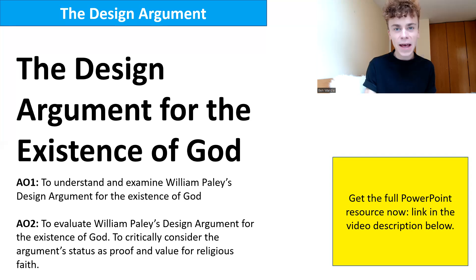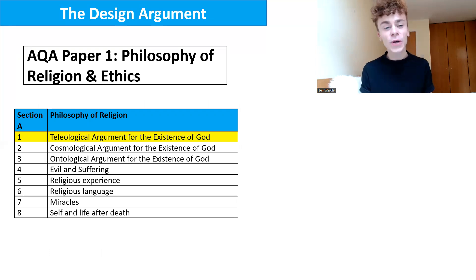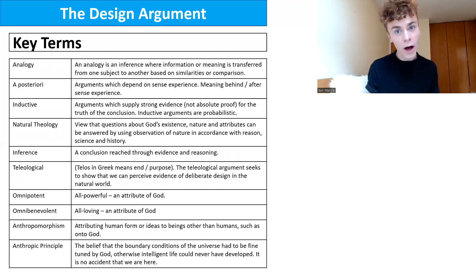In terms of where this fits on the AQA A-level specification, this is from Paper 1 — Philosophy of Religion and Ethics — and it is the first topic: the teleological argument for the existence of God.